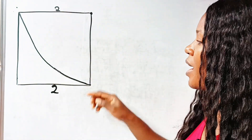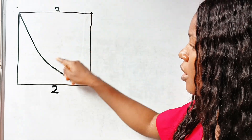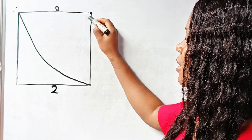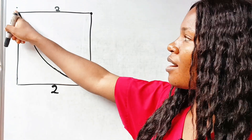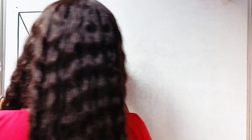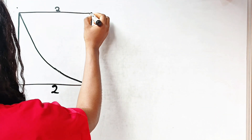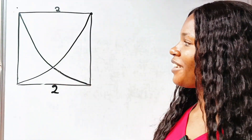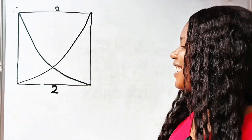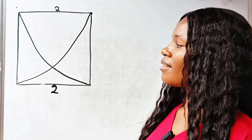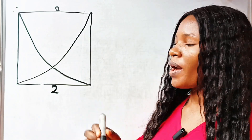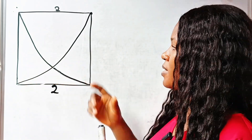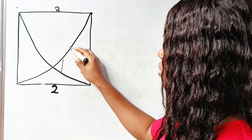Now similarly we have another quarter circle coming from here to here. This particular quarter circle has its center at this point. Okay, let's continue — this is the question. We are asked to find the area of the shaded portion, which is this place and this place.